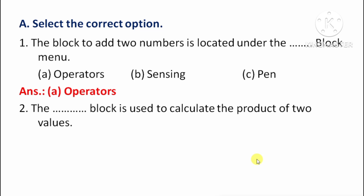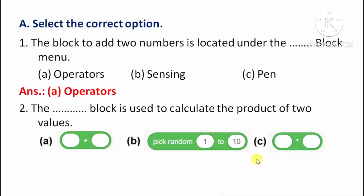Next question: Which block is used to calculate the product of two values? Do values ke product ko calculate karne ke liye kaunsa block hai? Option A: Plus block, Option B: Pick Random block, Option C: Multiplication block. The right answer is Option C: Multiplication block.